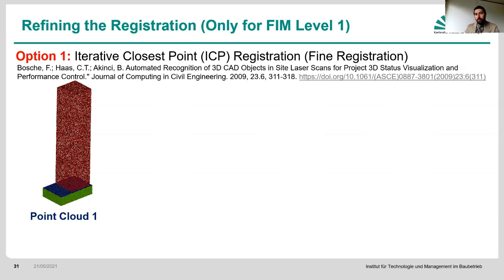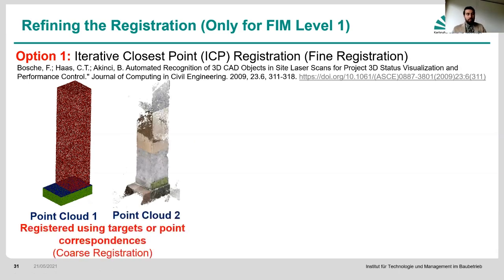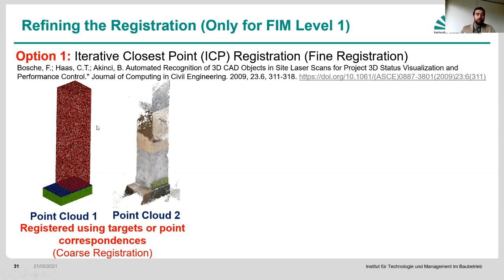You can now increase the redundancy. If you have point cloud one and point cloud two, you find, by means of the target-based registration, an initial registration. Then you find the closest point from the first and the second point cloud, because these are close enough together, but not exactly the same.